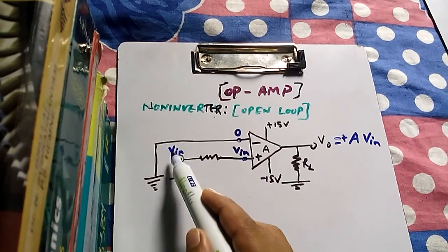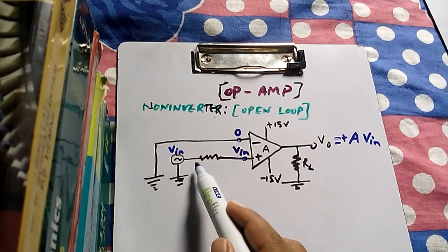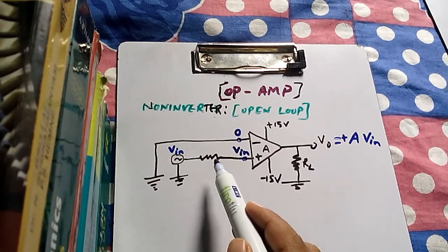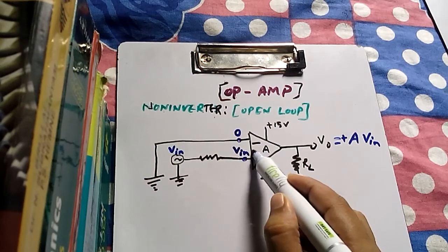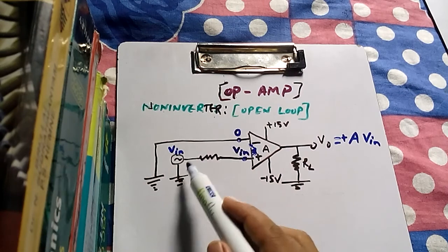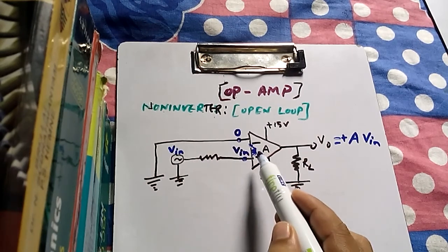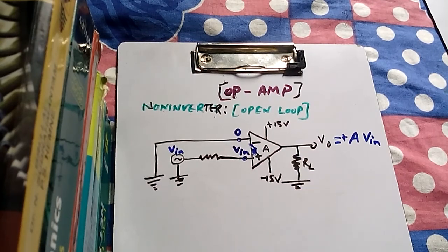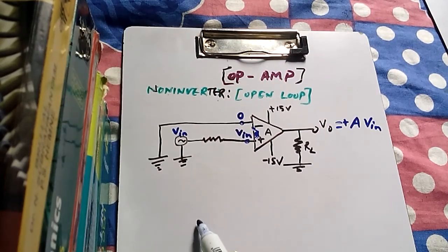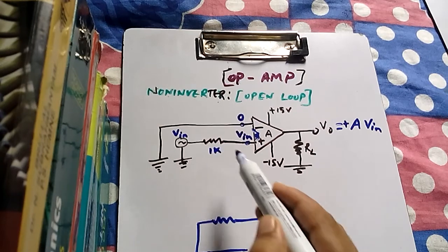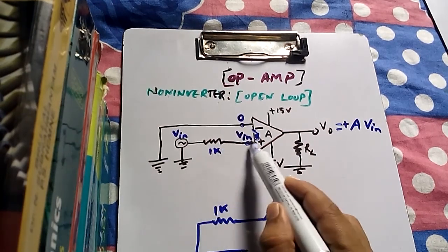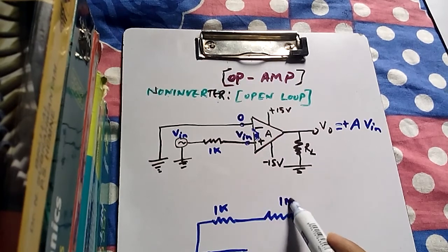Why is the voltage at the non-inverting terminal the same as the input voltage, and why is there no voltage drop across the input resistor? There are actually two resistors in the circuit. There is a very large internal resistance in series with the input resistor, and they form a voltage divider. Suppose this resistor is 1 kΩ and the internal resistance is 1 MΩ.